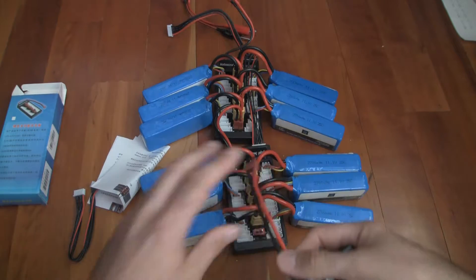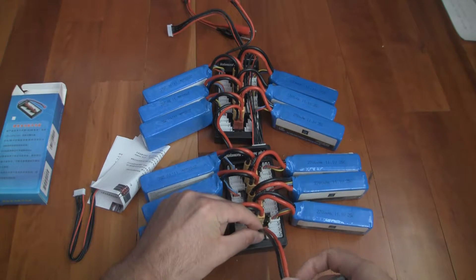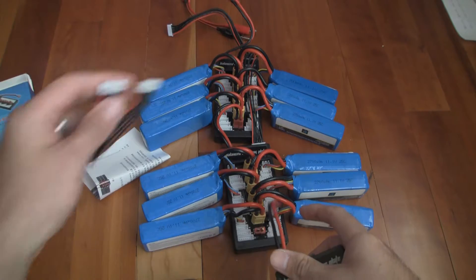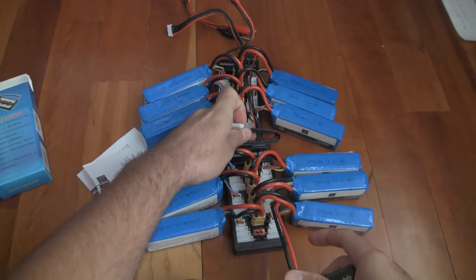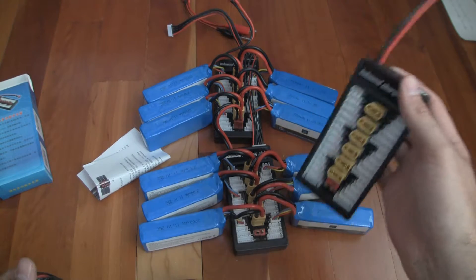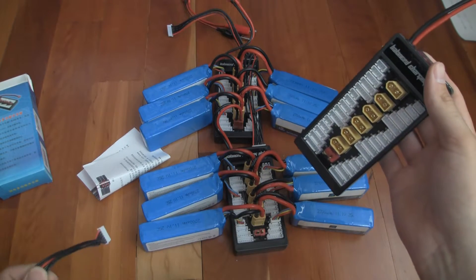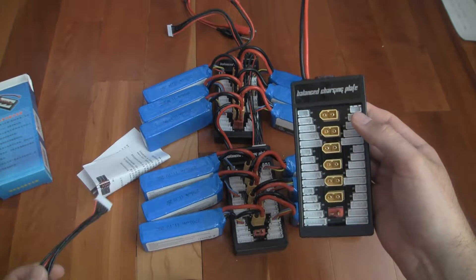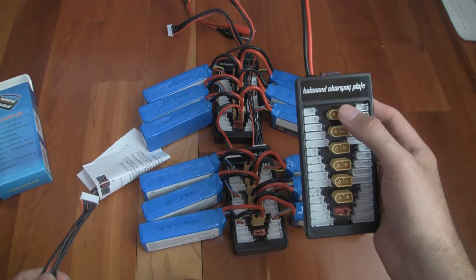And then if I were to hook this one up, I would hook this one up into here, and take the balance lead from this one here into this one here. So you can have up to 18 batteries connected at one time with XT60 connectors.